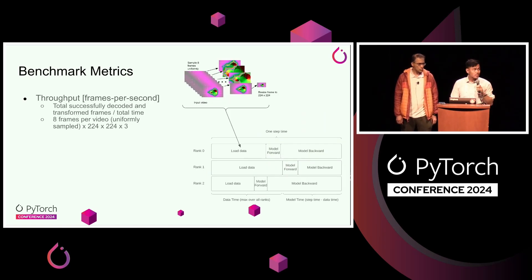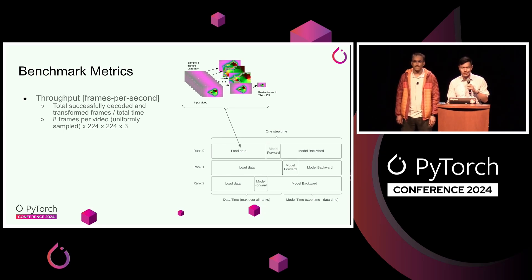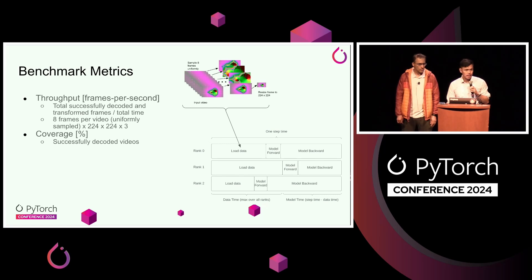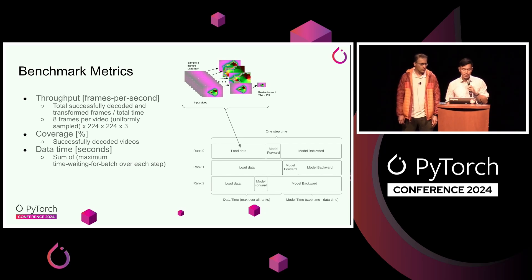The metrics we'll be tracking: number one is throughput, measured as frames per second — the total successfully decoded and transformed frames divided by total training time. For each video, we sample eight frames at 224 by 224 resolution. We'll also track a metric we call coverage, which is the percentage of successfully decoded videos. And we'll look at what we call data time — for each training step, it's the maximum fetch time across all ranks, summed across the entire training run.